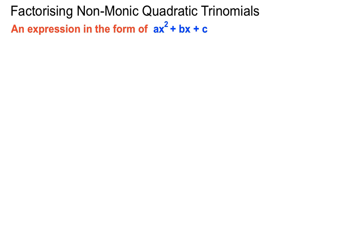Alright, factorising non-monics. Now an expression in the form of ax² + bx + c is a quadratic trinomial. It's a special type of algebraic expression and it's called a quadratic trinomial because there's three terms there. An example in this case is 6x² + 13x + 5. We're going to have a look at this as our key example here.